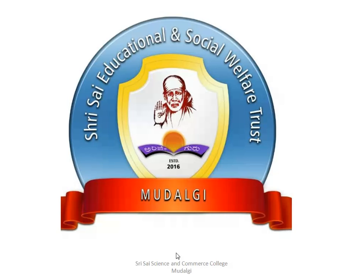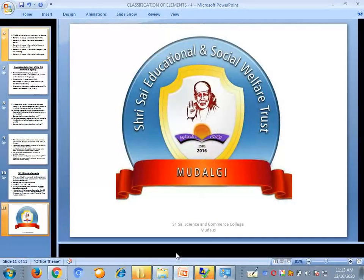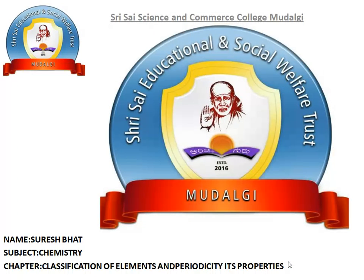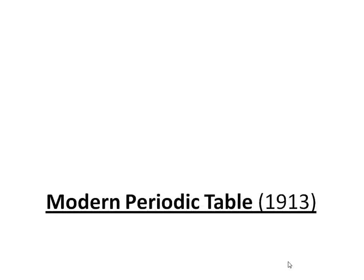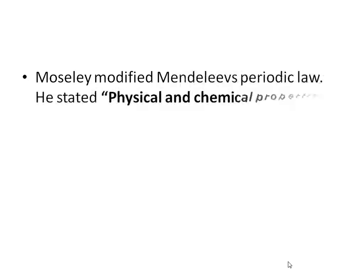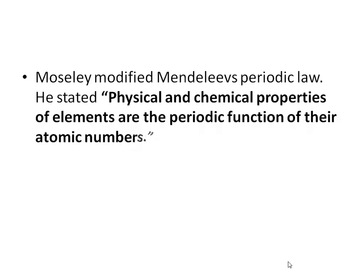We have seen Mendeleev's periodic law with respect to groups, series, and periods. Now, the next major classification of elements used nowadays is the long form periodic table, or modern periodic table. This modern periodic table was established in the year 1913 by the scientist Moseley, who modified Mendeleev's periodic table.